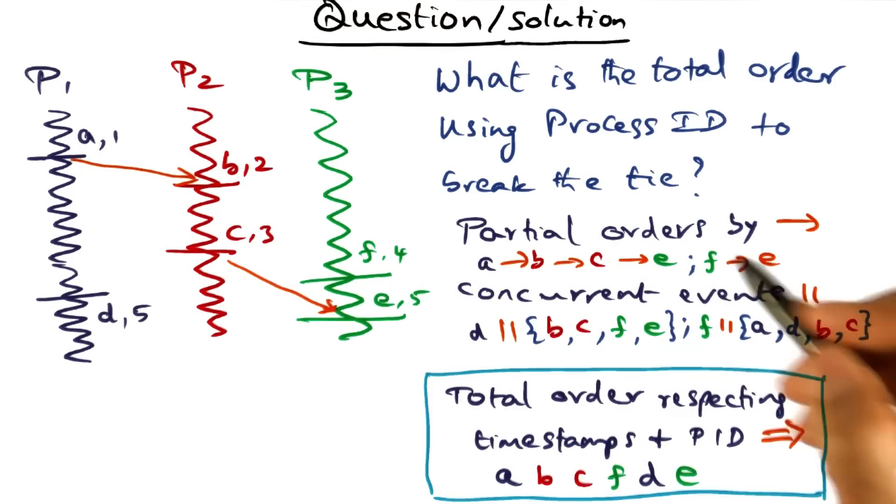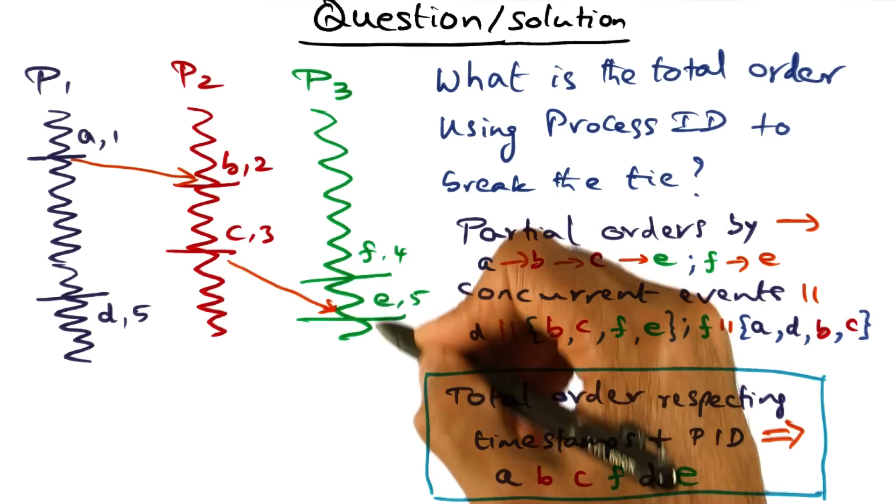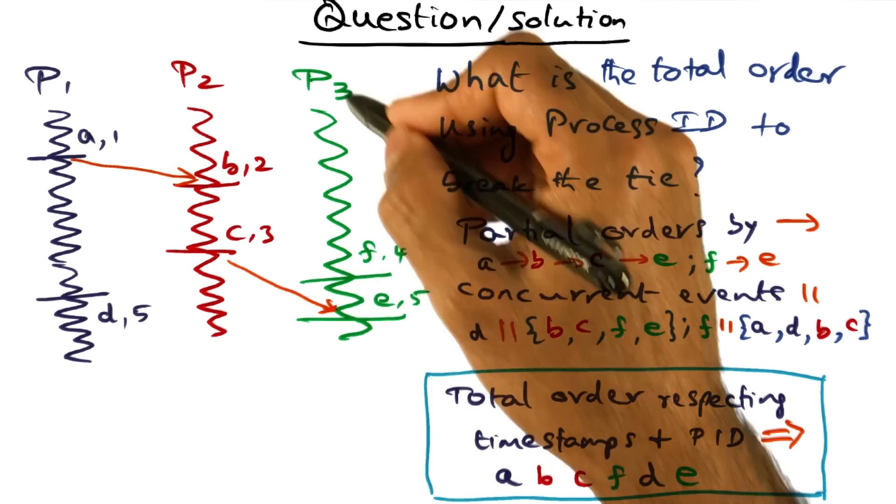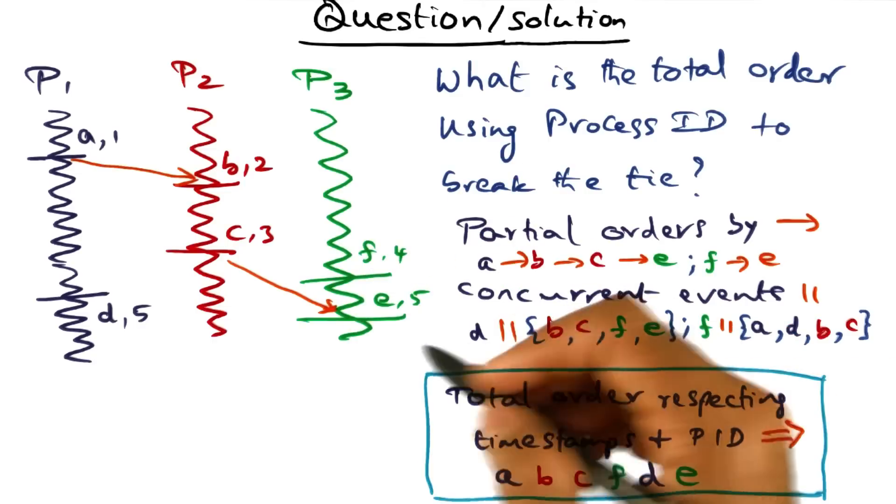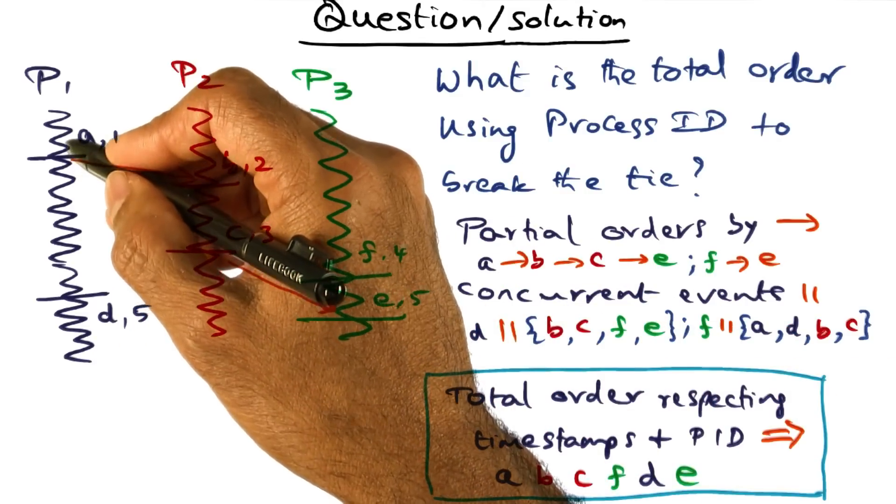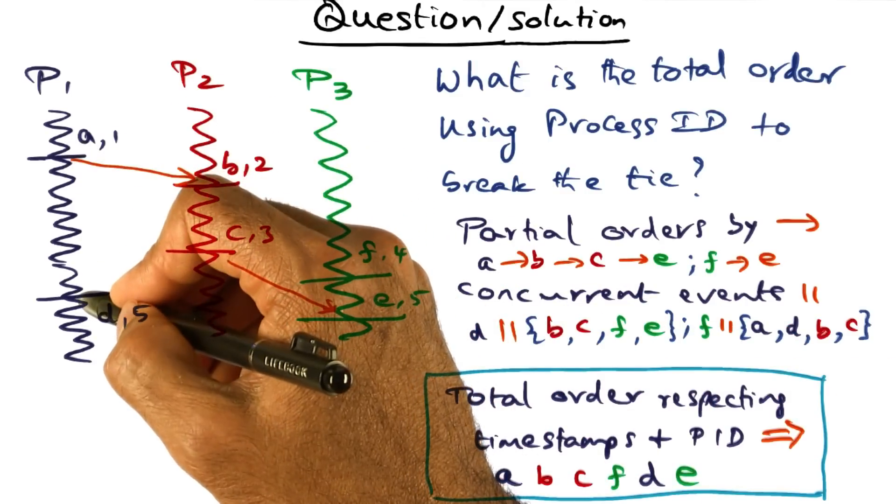When we come over here, we also observe that F happens before E. That's because of the sequentiality of this process. And similarly, we can see that in process P1, A happens before D.